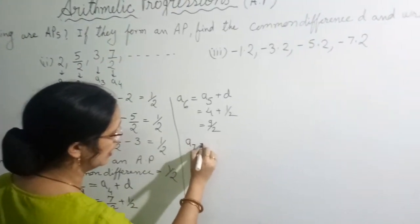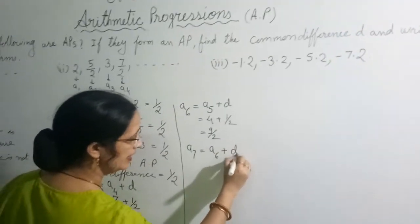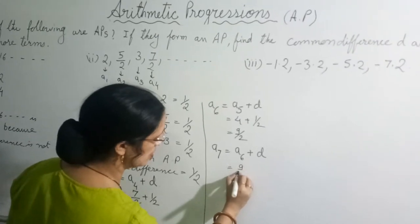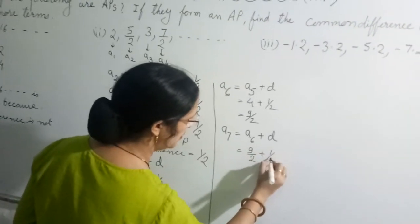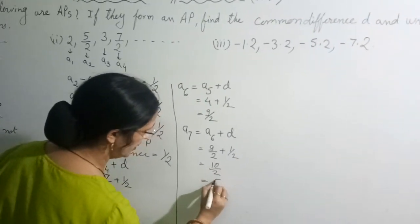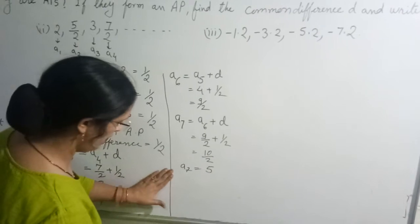And 7th term again. In previous term we will add difference. So what is previous term? Previous term is 9 upon 2 plus half. So it will become 10 upon 2. So it will become 5. So A7 is 5.